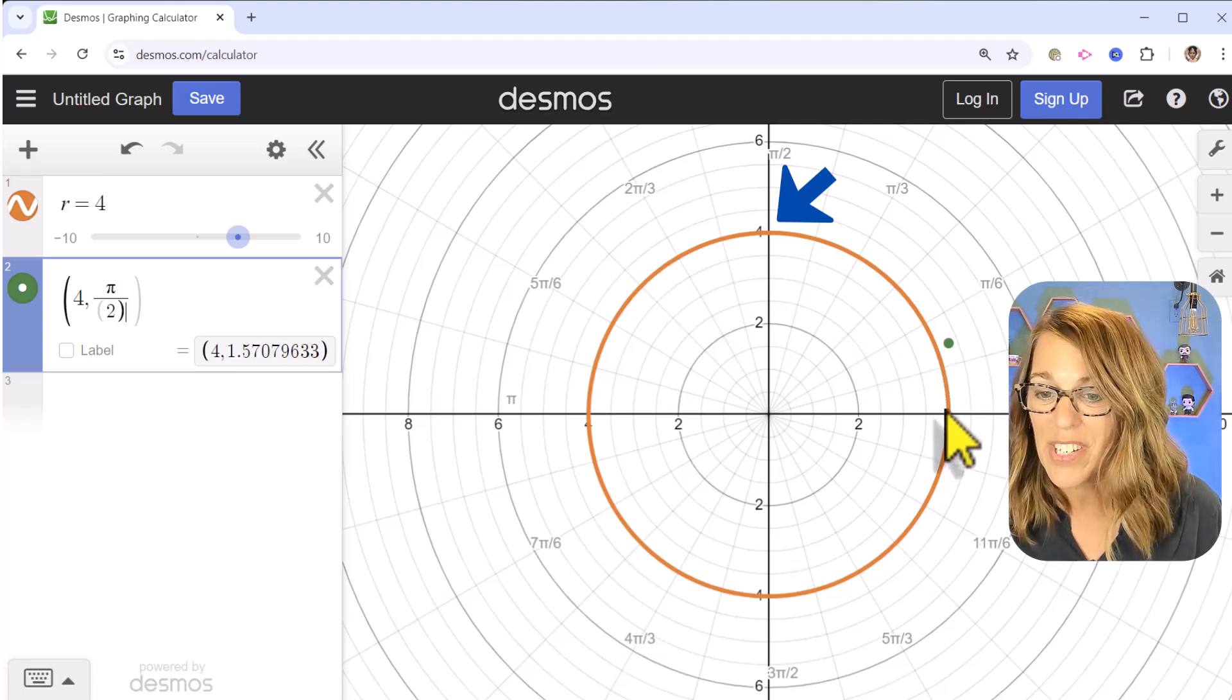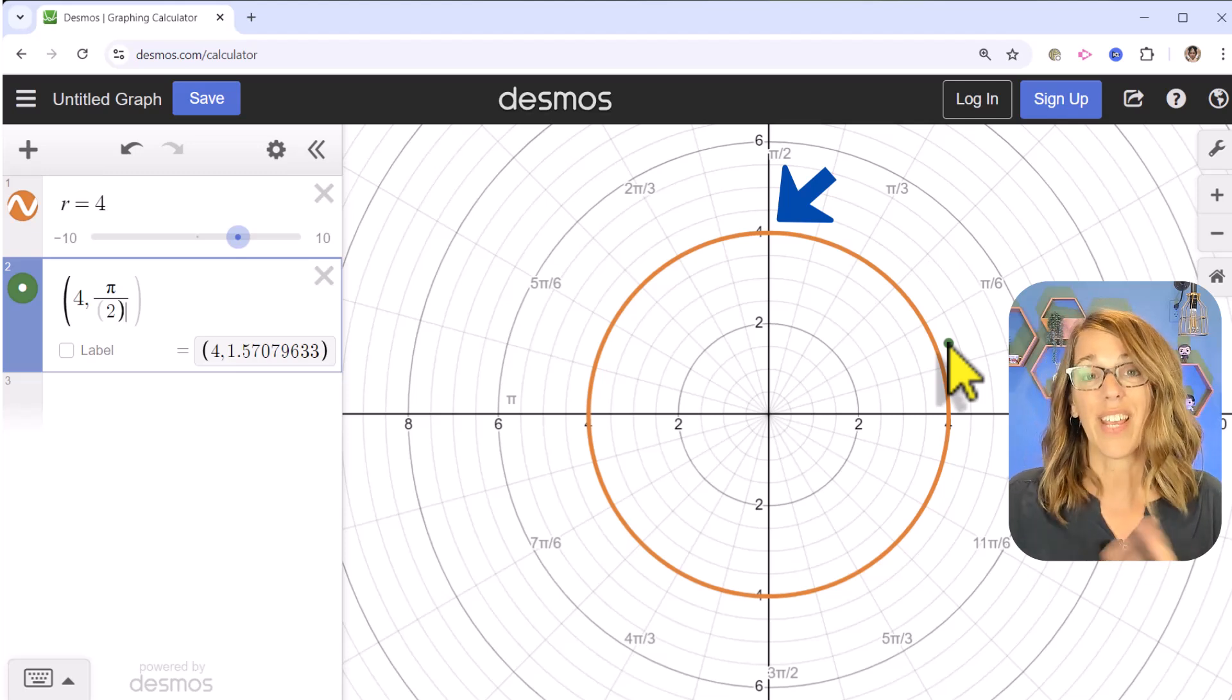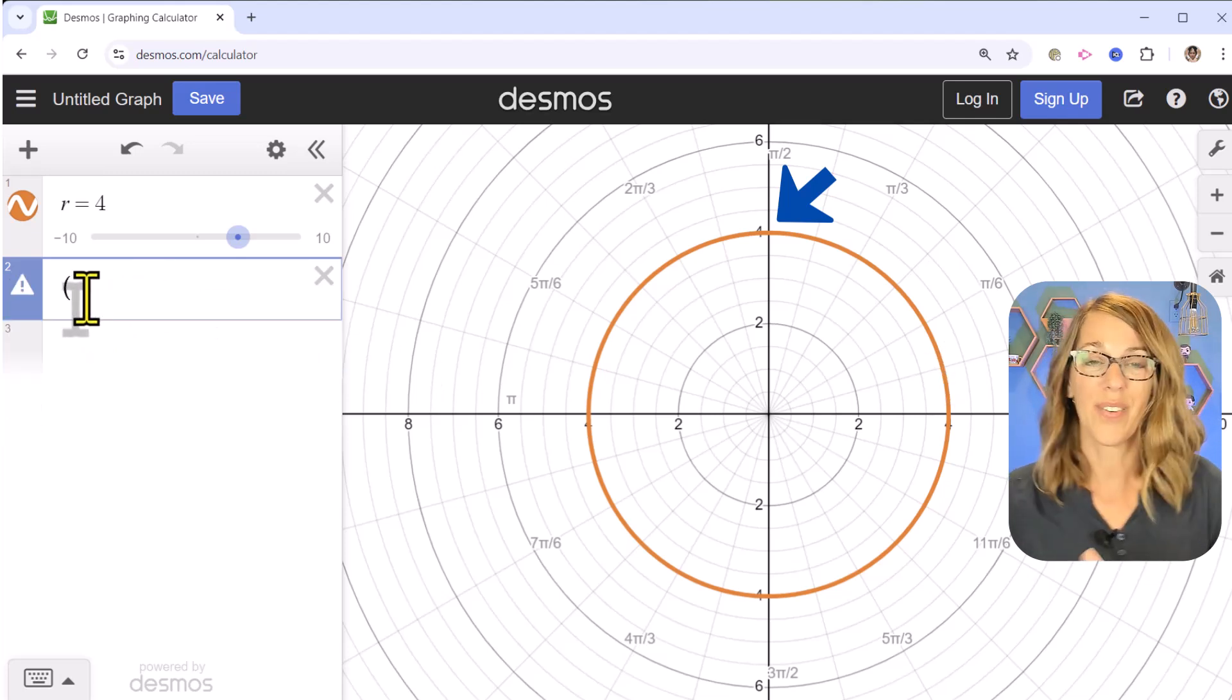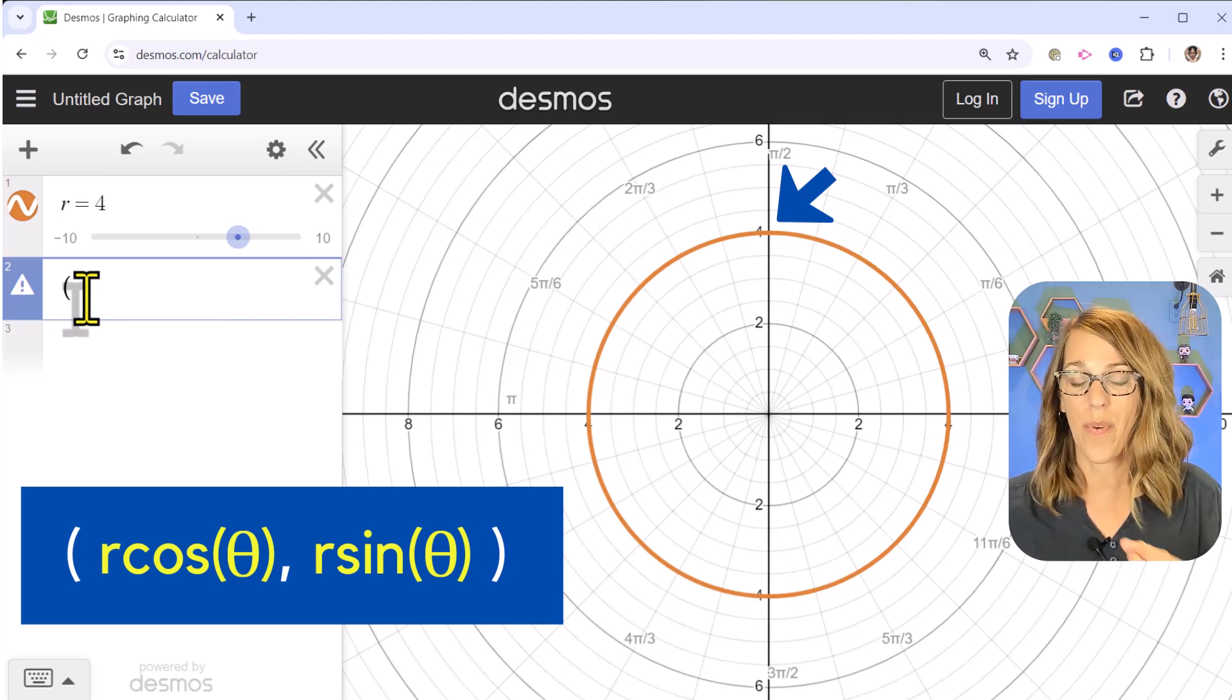It gives me this point over here, which lines up with 4, but it also lines up with 1.57, which is π divided by 2. So instead, we're going to use r*cos(θ) for the x and r*sin(θ) for the y.